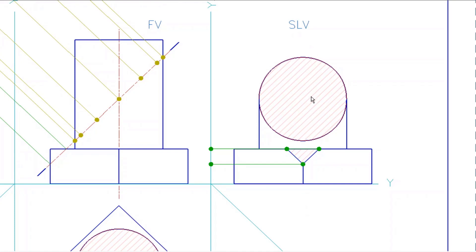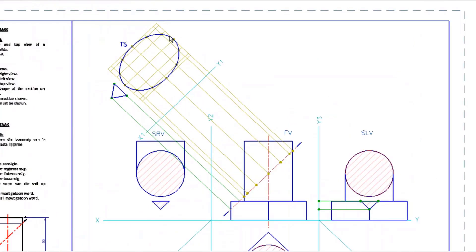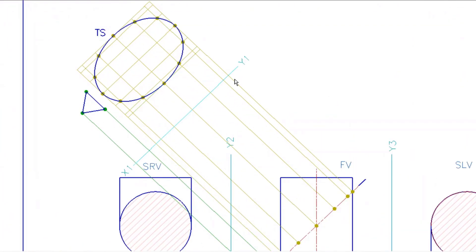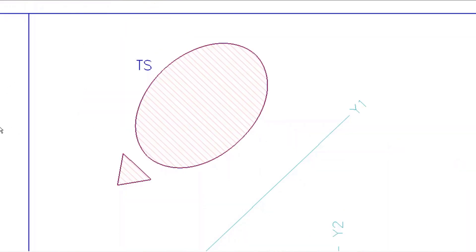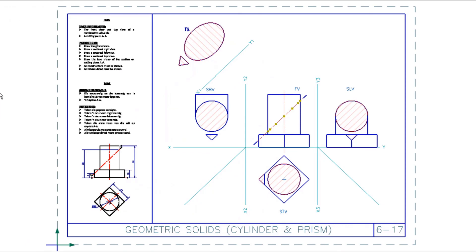Some students don't prefer to use the XY line due to tight space, so instead they draw a center through the side view and measure distances from the center — both for the curve and the corner — then plot the points around a center in the auxiliary view rather than from an XY line. Either method is fine. Just make sure you write TS and add 45 degree hatching to it — it doesn't have to be too close or it will take too long in the exam. And with that, we are done — good luck.